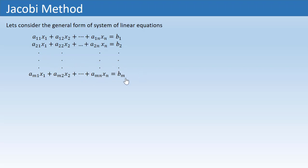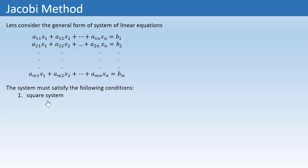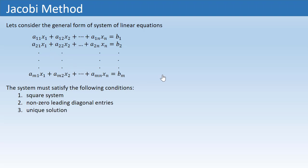In order to apply this method, this system must satisfy three conditions. The first condition is that it should be a square system, meaning the number of equations should equal the number of unknowns. The second condition is that the leading diagonal entries in the coefficient matrix must be non-zero — that is the diagonal from top-left to bottom-right. The third condition is that the system must have a unique solution.